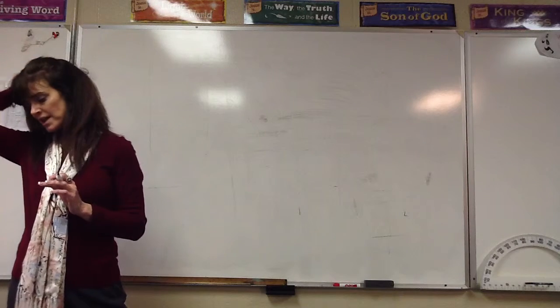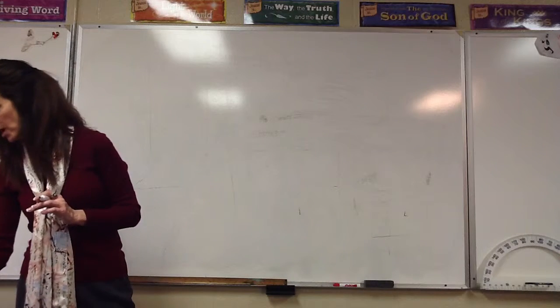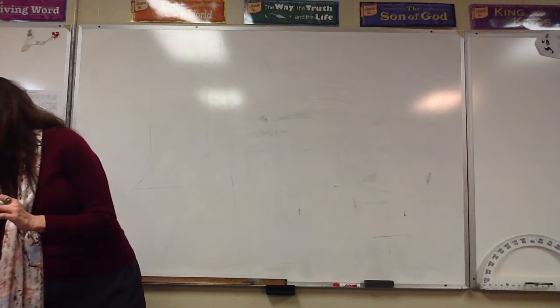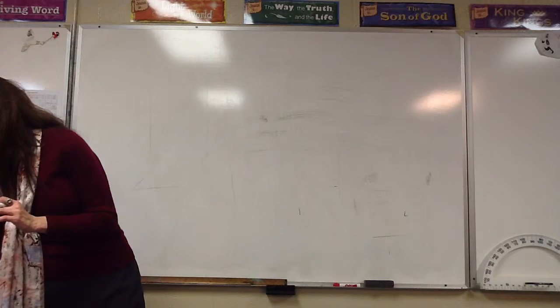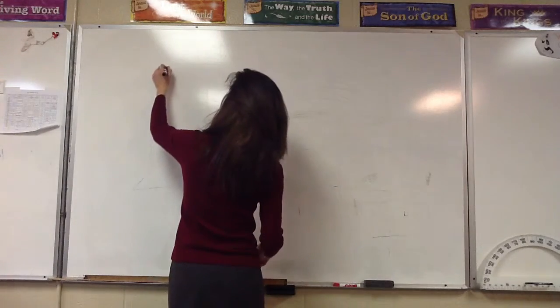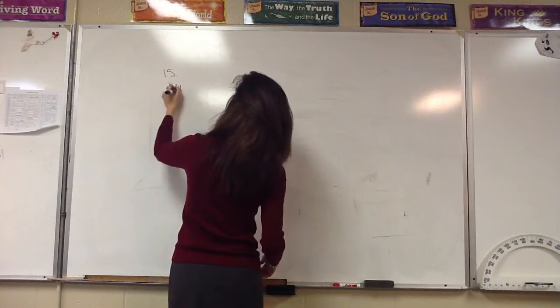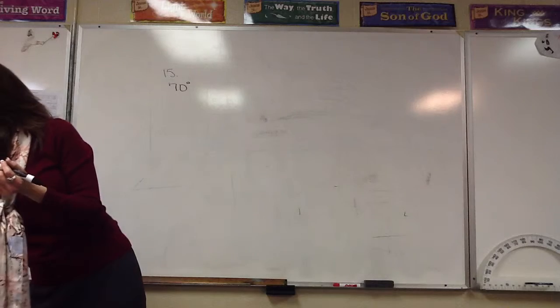Now, from your homework on page 862, let's do some co-terminal angles. Let's look at number 15. We have a 70-degree angle, and it tells us to give two angles that are co-terminal, one positive and one negative.